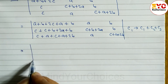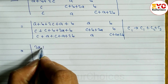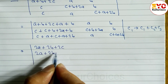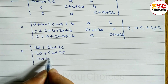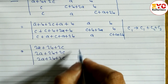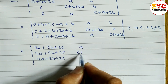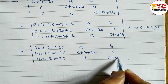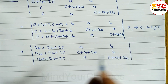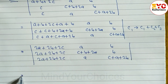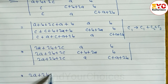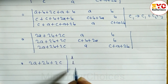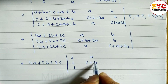Now adding all like terms in the first column: A+A gives 2A, B+B gives 2B, plus 2C. So each entry in C1 becomes 2A+2B+2C. Here also we get 2A+2B+2C, and here also 2A+2B+2C. The second and third columns stay the same.